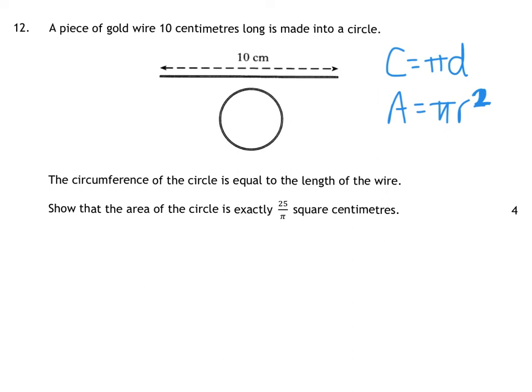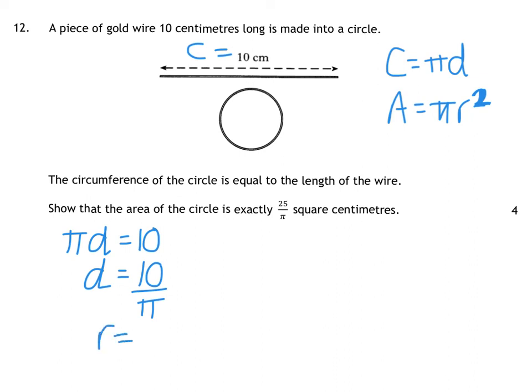It tells us a piece of gold wire is 10 centimetres long and they make it into a circle, so our circumference is 10. It says show that the area of the circle is exactly 25 over pi. If my circumference is 10, that means pi D equals 10, so my diameter is 10 over pi. If my diameter is 10 over pi, my radius is half of that — half of 10 is 5, so my radius is 5 over pi.